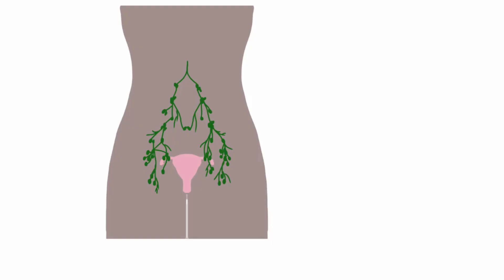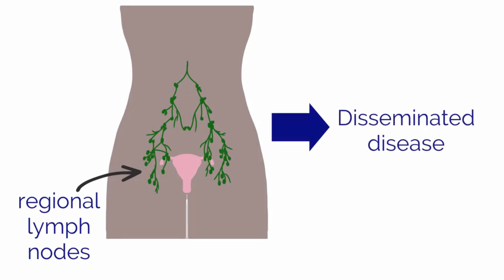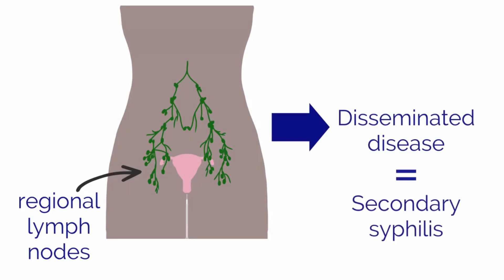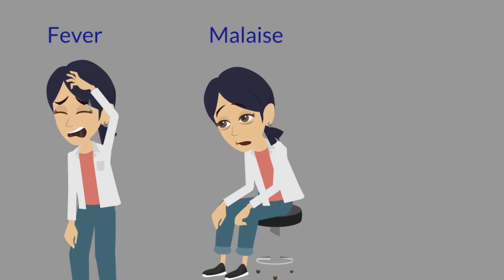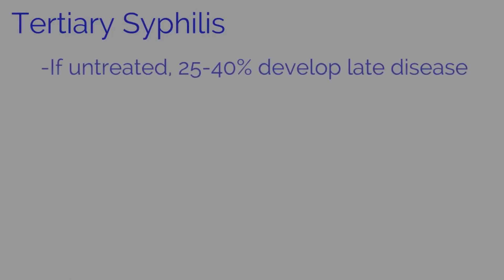Spirochetes travel via the lymphatic system to regional lymph nodes, causing disseminated disease consistent with secondary syphilis, occurring weeks to a few months after the chancre develops. Symptoms of secondary syphilis include constitutional symptoms such as fever, malaise, and myalgias. Symptoms of both primary and secondary syphilis self-resolve. If untreated, 25–40% of patients will develop late disease or tertiary syphilis.